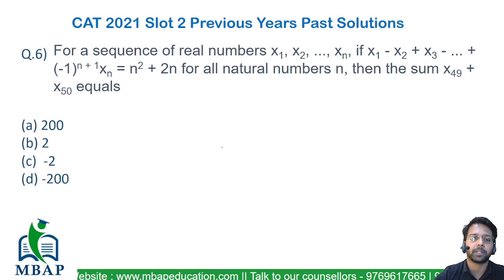Have a look at the next question which came in the CAT 2021 slot 2. The question says, for a sequence of real numbers x1,